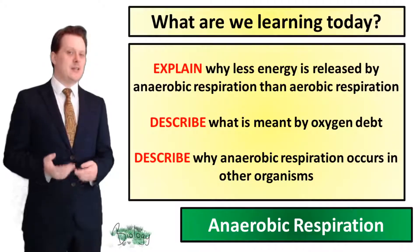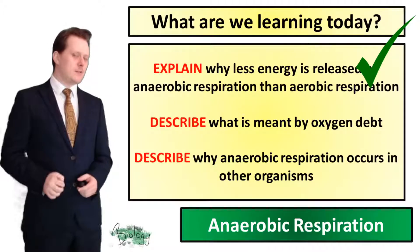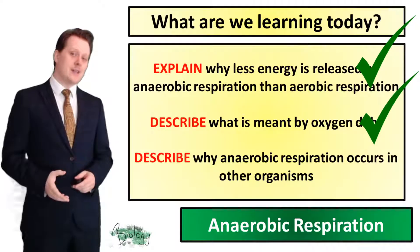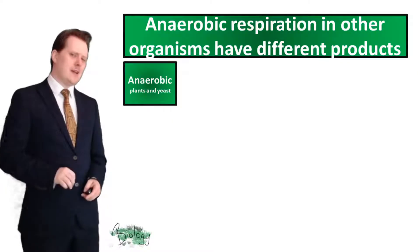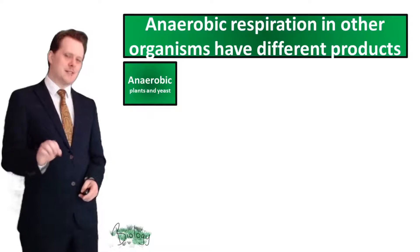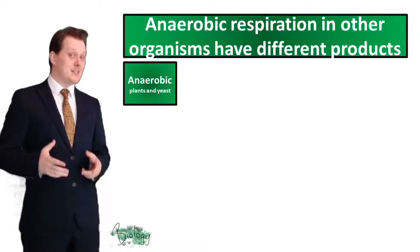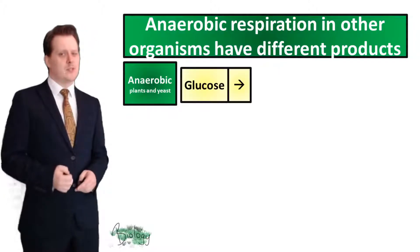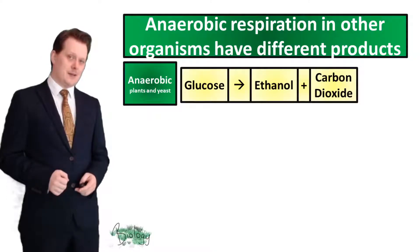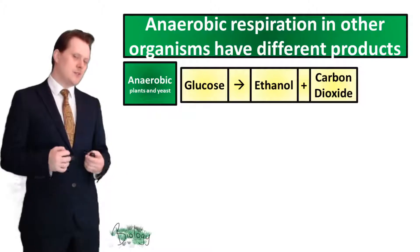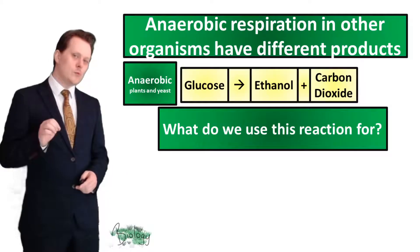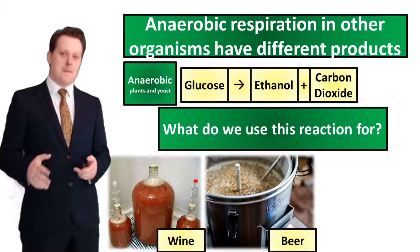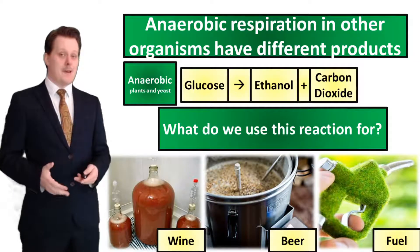So now we can explain why less energy is released by anaerobic respiration — because that glucose is not fully broken down — and we can describe what is meant by oxygen debt: the oxygen required to metabolize lactic acid. Unlike aerobic respiration, which is the same in plants and animals, anaerobic respiration is different in other organisms. In plants and yeast, they take glucose and instead of producing lactic acid, they produce ethanol and carbon dioxide. This reaction is very useful to us as humans — we exploit it to make wine and beer, and we also use that ethanol to burn as a fuel.